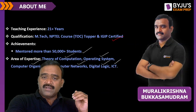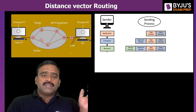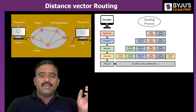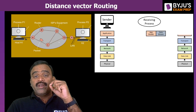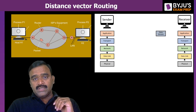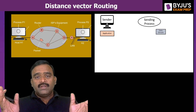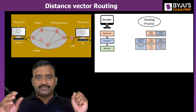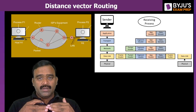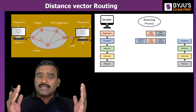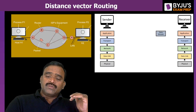Let us begin the session of distance vector routing. In distance vector routing, we take information from neighbors. For example, this is a source computer and this is a destination computer. These two computers are attached via routers, and information is passed from one router to another. Every router has to execute a routing technique to forward packets to the destination. The outcome of any routing technique is to have a shortest path from source to destination, so it takes less cost to travel the packet all the way. That is the main goal.